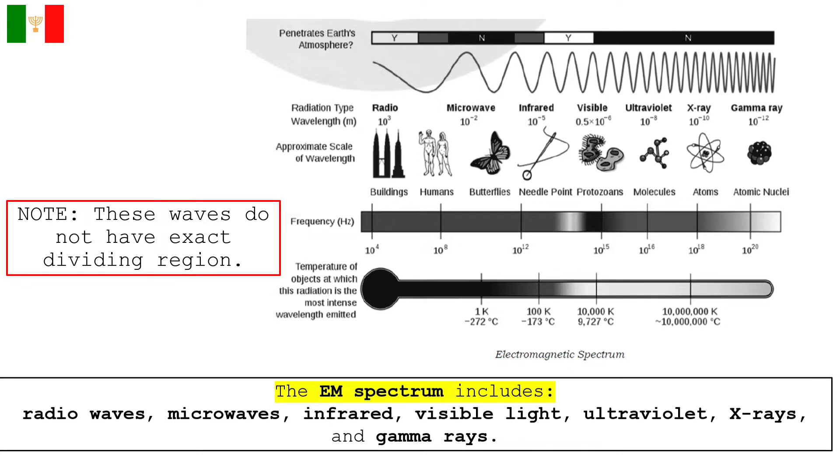We have the radio waves, microwaves, infrared, visible light, ultraviolet, x-rays, and gamma rays. Take note, these waves do not have exact dividing region.